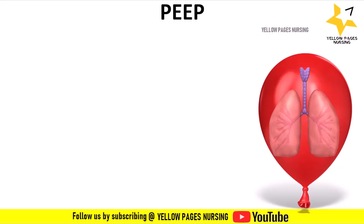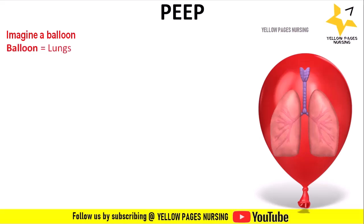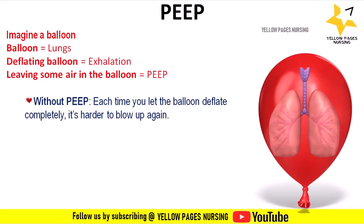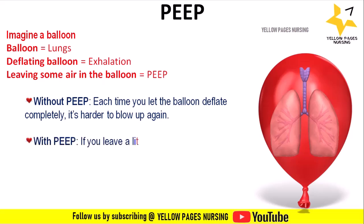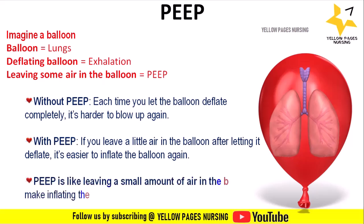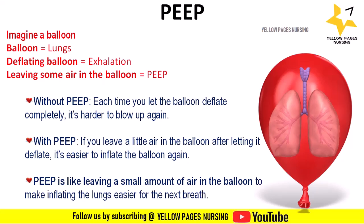To understand how PEEP works, imagine a balloon as the lungs: deflating the balloon represents exhalation, and leaving some air in the balloon represents PEEP. Without PEEP, each time the balloon deflates completely, it is harder to blow up again. With PEEP, leaving a little air inside after deflation makes it much easier to inflate again. This is the mechanism of PEEP — leaving a small amount of air in the balloon makes inflating the lungs easier for the next breath.